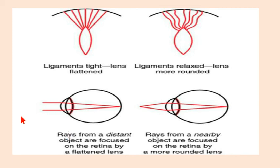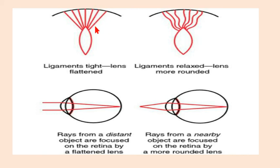Light rays from distant objects are focused on the retina by means of a flattened lens. The lens becomes flattened when we are observing things at a distance. This happens because the ciliary muscles relax and the suspensory ligaments tighten, as you can see here.